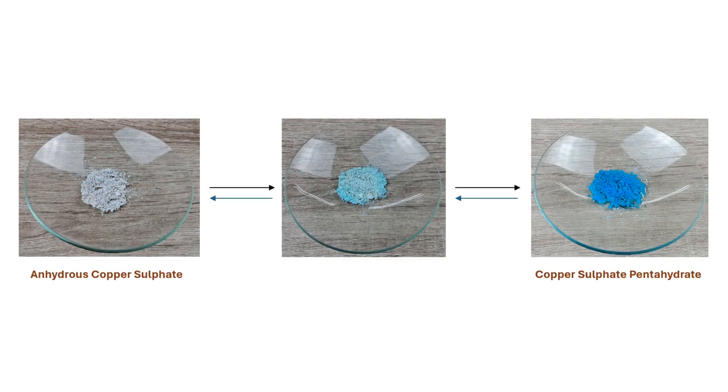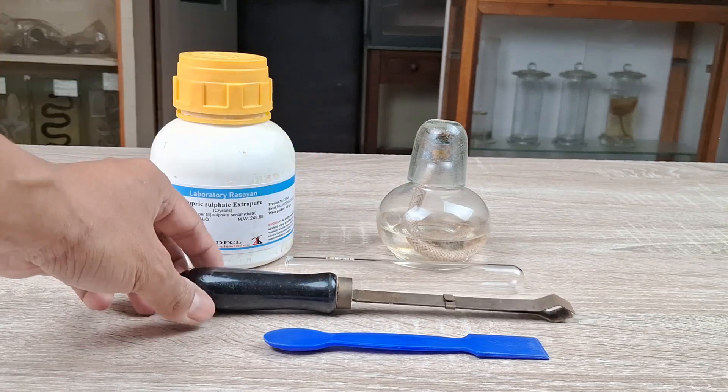This transformation can be represented as shown here. Materials required: a test tube, test tube holder, spirit lamp or Bunsen burner, spatula, and copper sulfate pentahydrate crystals.